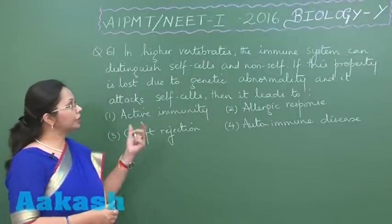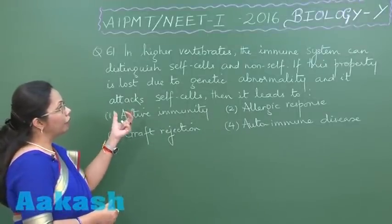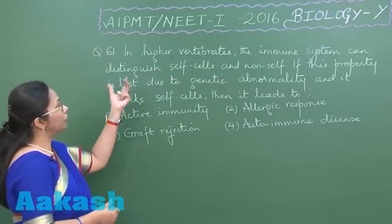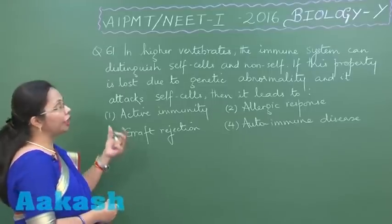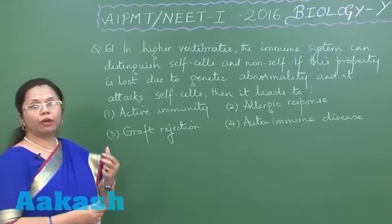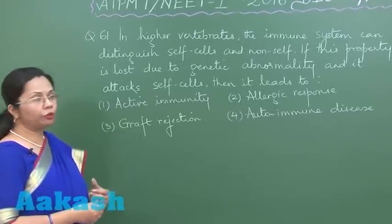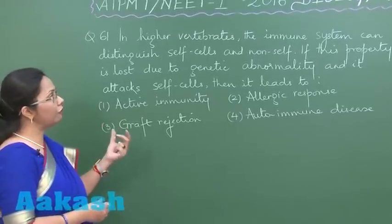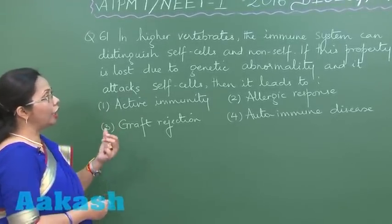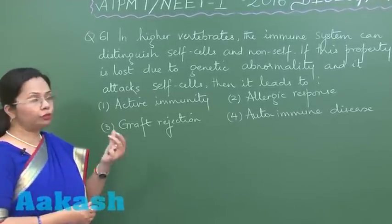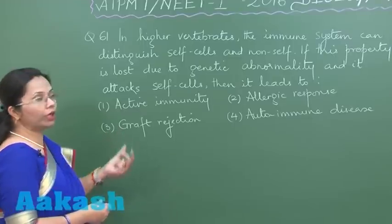In question 61, we know that in the case of higher vertebrates, the immune system has the ability to distinguish between self-cells and non-self. Now if somehow this property is lost, then what can result?